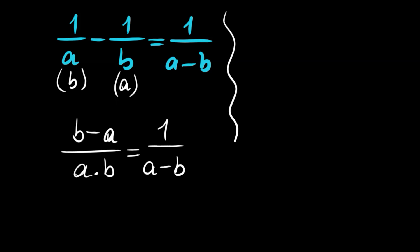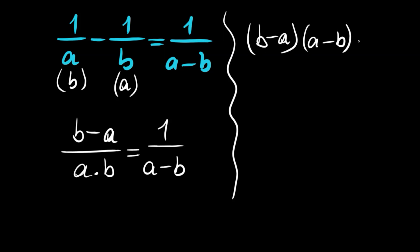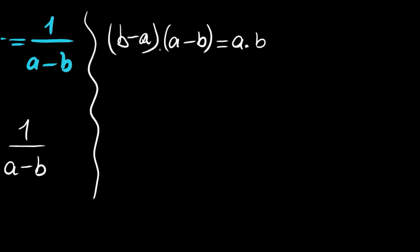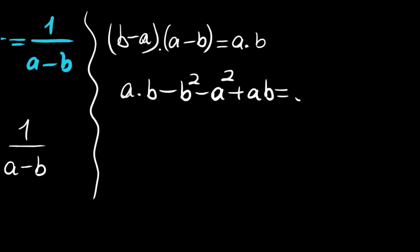Cross multiplying, we have b minus a times a minus b is equal to a times b. Distributing the left hand side, we have a times b minus b squared minus a squared plus a times b, and this is equal to a times b.